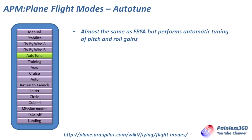Auto Tune is a special mode you would only use when tuning the PID settings for roll and pitch. It's essentially fly-by-wire A, but it will flick the wing left and right and also pitch it up and down, refining the PID settings so that they're almost perfect.